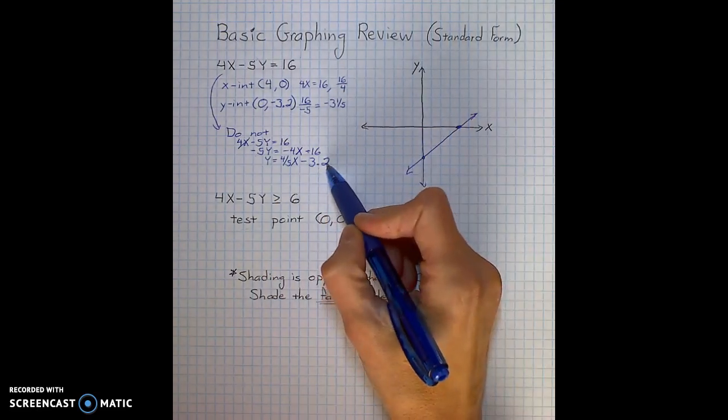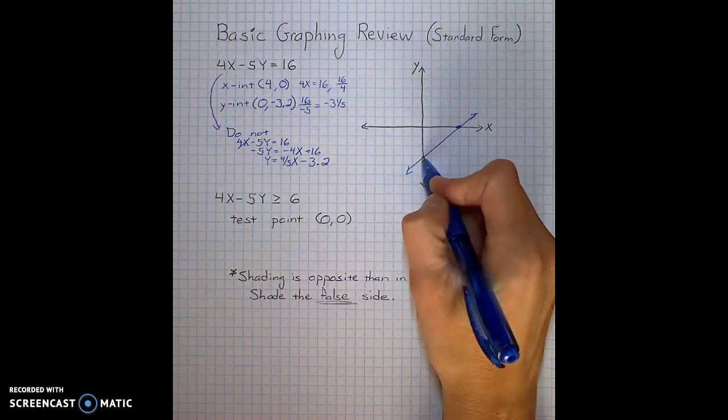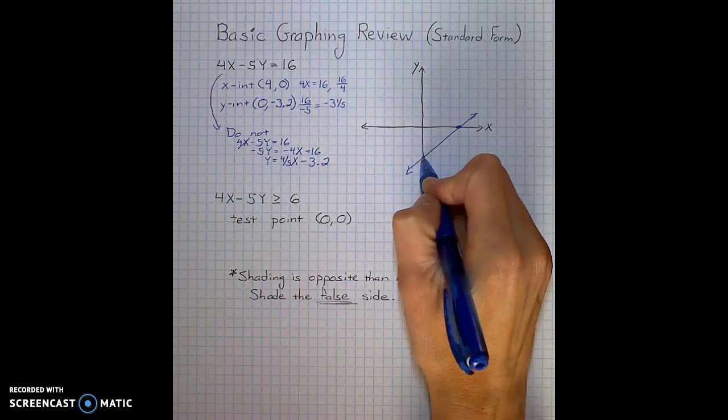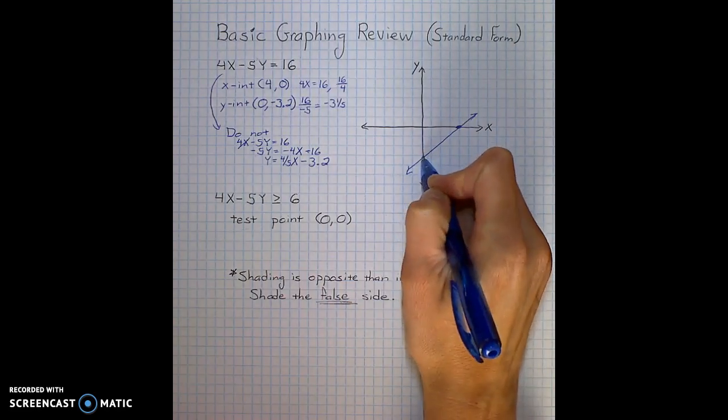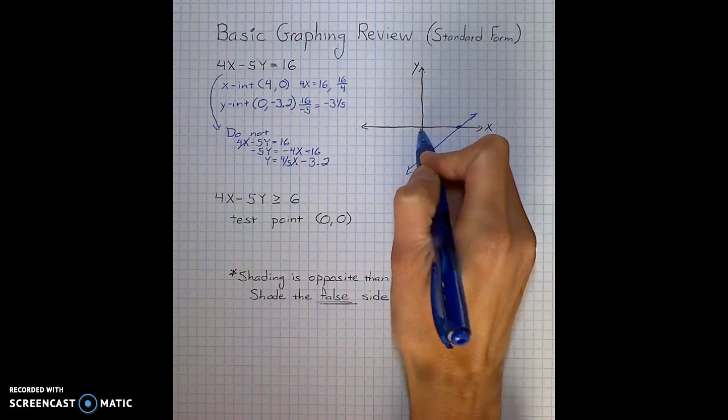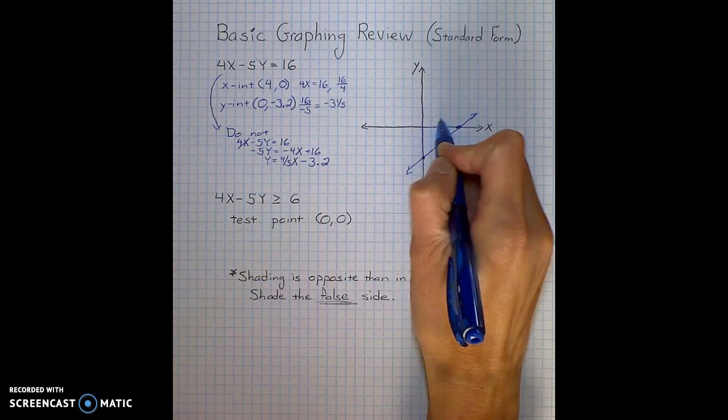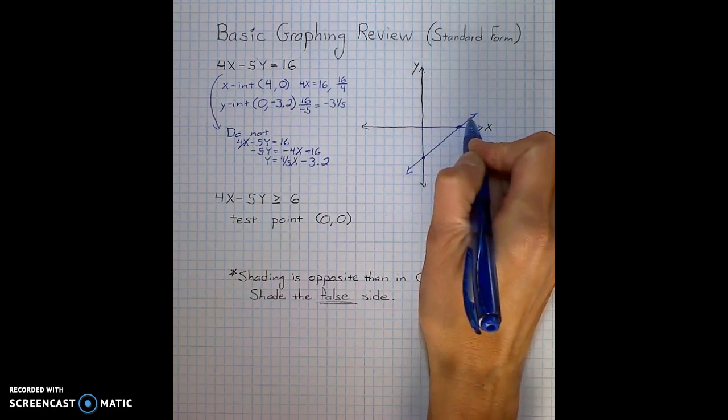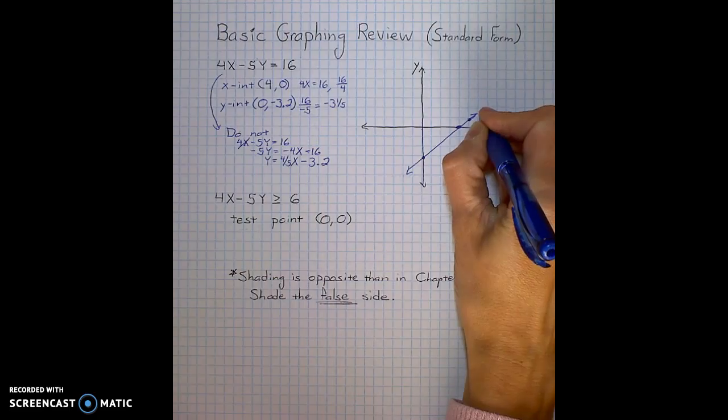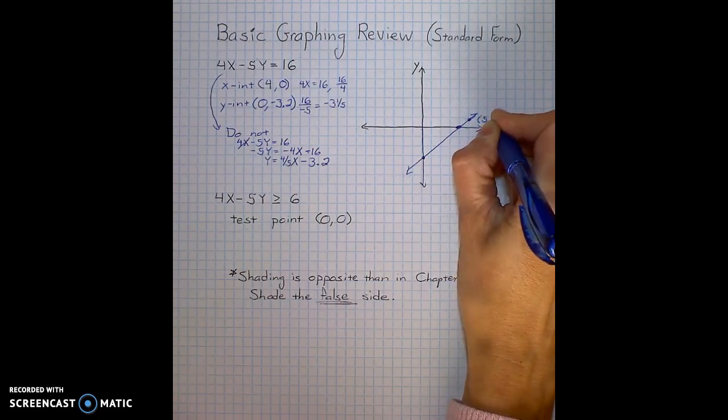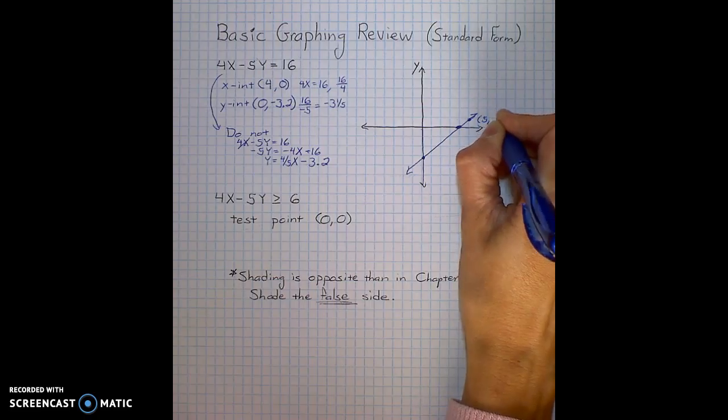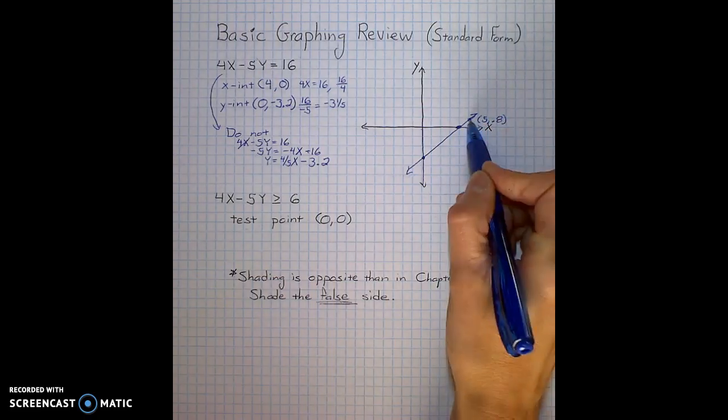He would plot negative 3.2. He would use the slope of going up 4. Now it's hard to go up 4 when your y-intercept is a decimal. But if I went up 4, I would go 1, 2, 3, 4. And then I would go over 5. That point would have been the point 5 comma 0.8. It's very challenging to realize what that is.